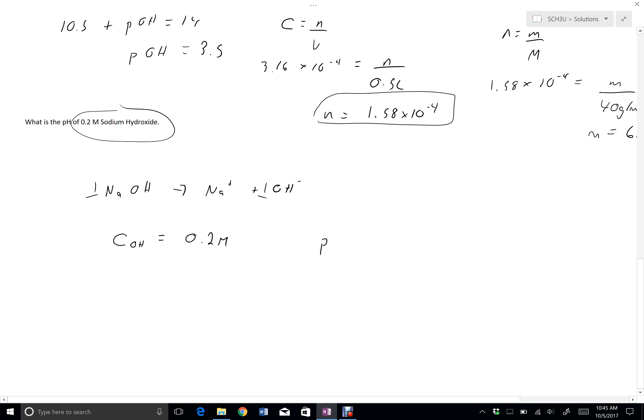So that means my pOH would be equal to negative log 0.2, which is 0.699.